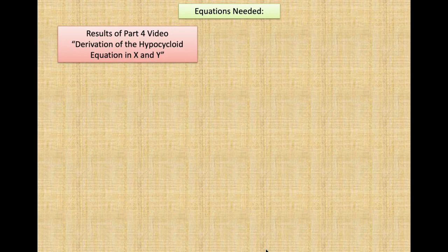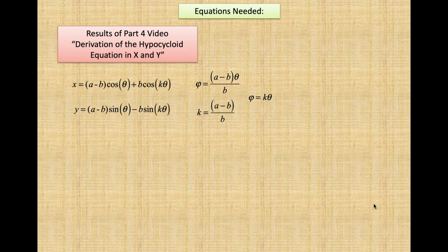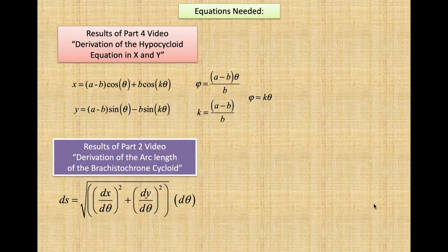Equations needed: we need the results of part 4 video, derivation of the hypercycloid equations in x and y. Here is x and y; phi is equal to a minus b times theta over b, and k is equal to a minus b divided by b, so phi is equal to k times theta. We also need the results of part 2 video, derivation of the arc length of the brachistochrone cycloid. You can go to those videos to see how those were derived. I couldn't put all of these together because it would be too long of a video, so I derived these in other videos and we will refer to them when we need them.